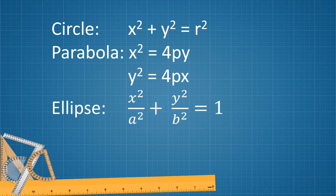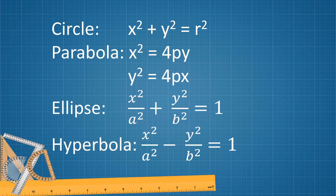The next one is an ellipse. An ellipse has a standard form of x squared over a squared plus y squared over b squared equals 1. This standard form has a vertical orientation if a squared is below y squared. Next is hyperbola. Hyperbola has a standard form of x squared over a squared minus y squared over b squared equals 1. The orientation is horizontal because x squared is positive. However, if y squared is positive, then the hyperbola is oriented vertically.